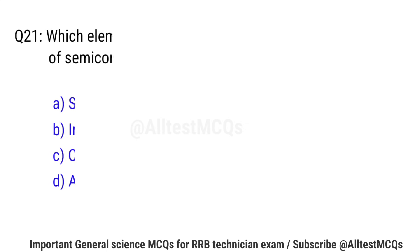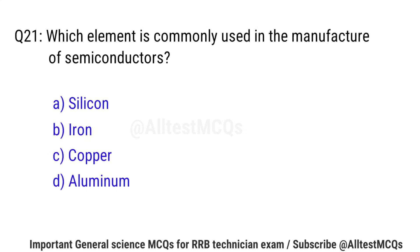Question No. 21: Which element is commonly used in the manufacture of semiconductors? Right option is A: Silicon.